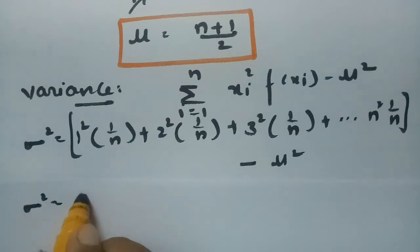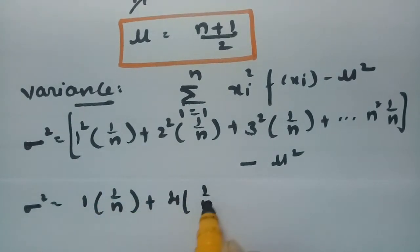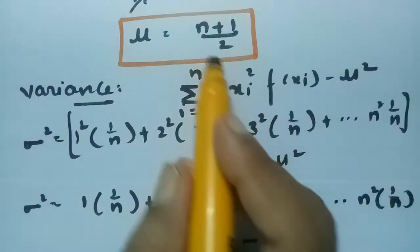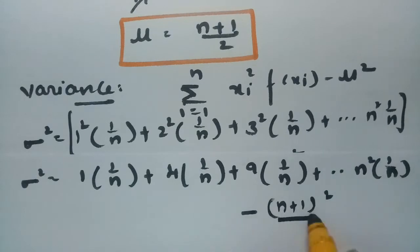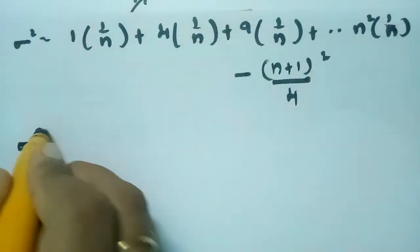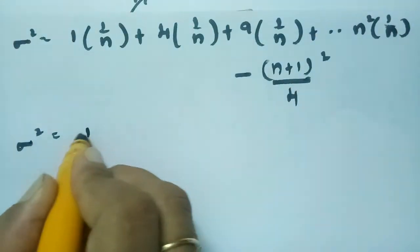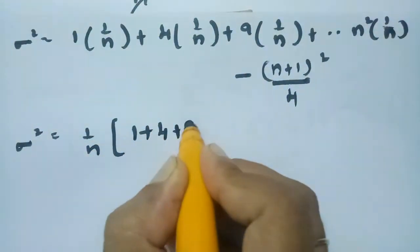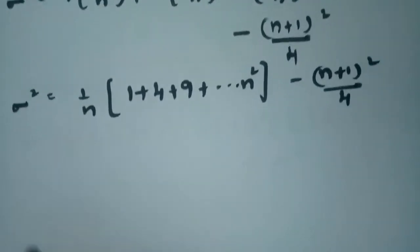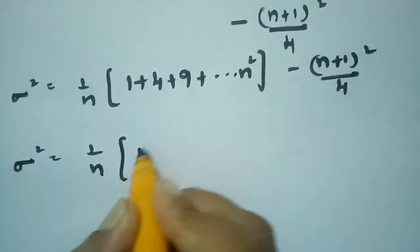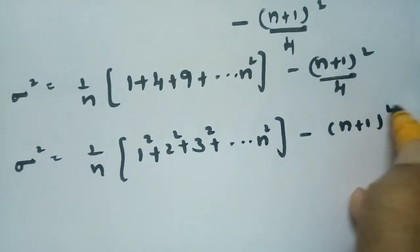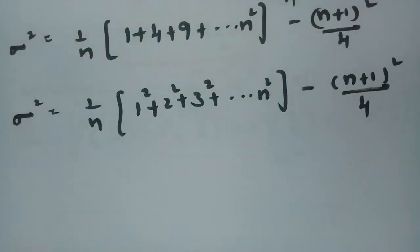Substituting, σ² = 1×(1/n) + 4×(1/n) + 9×(1/n) + ... + n²×(1/n) − (n+1)²/4. Taking 1/n as common, this becomes (1/n)(1 + 4 + 9 + ... + n²) − (n+1)²/4, which equals (1/n)(1² + 2² + 3² + ... + n²) − (n+1)²/4.